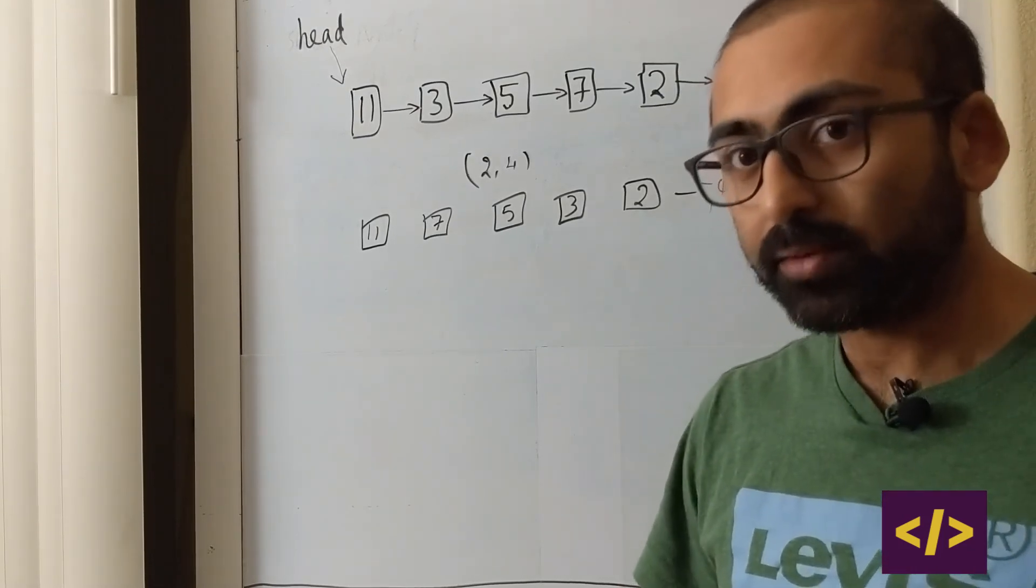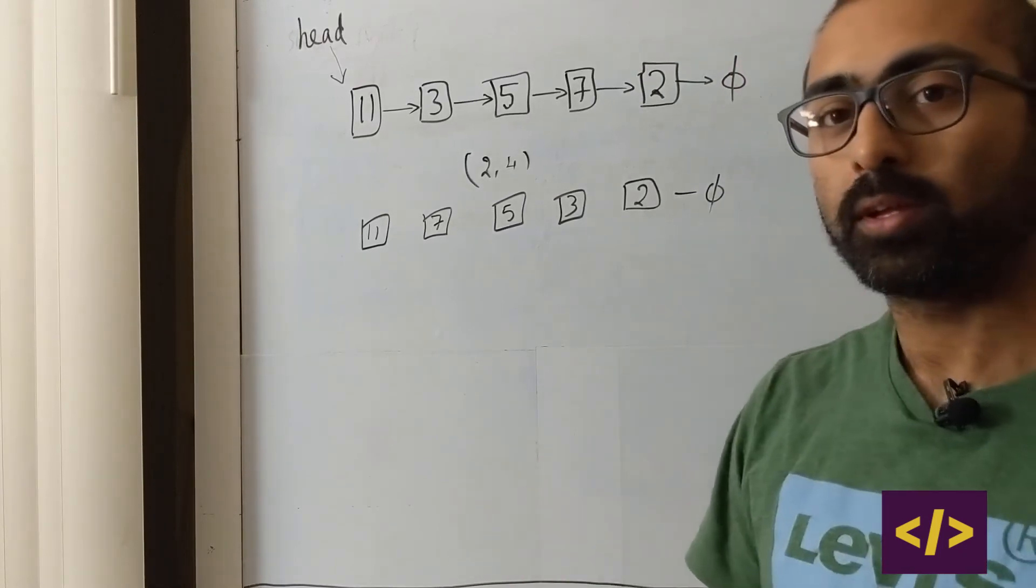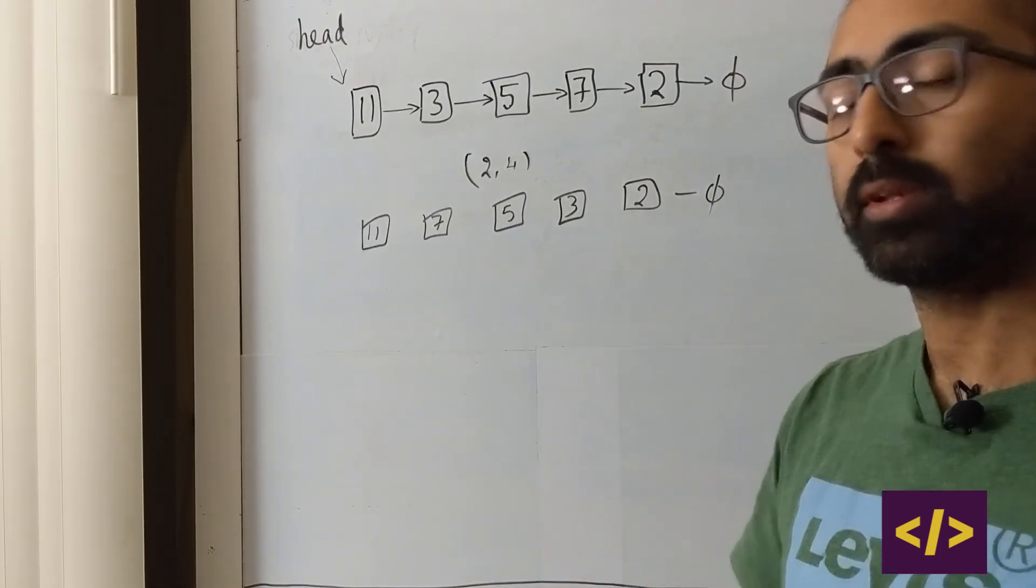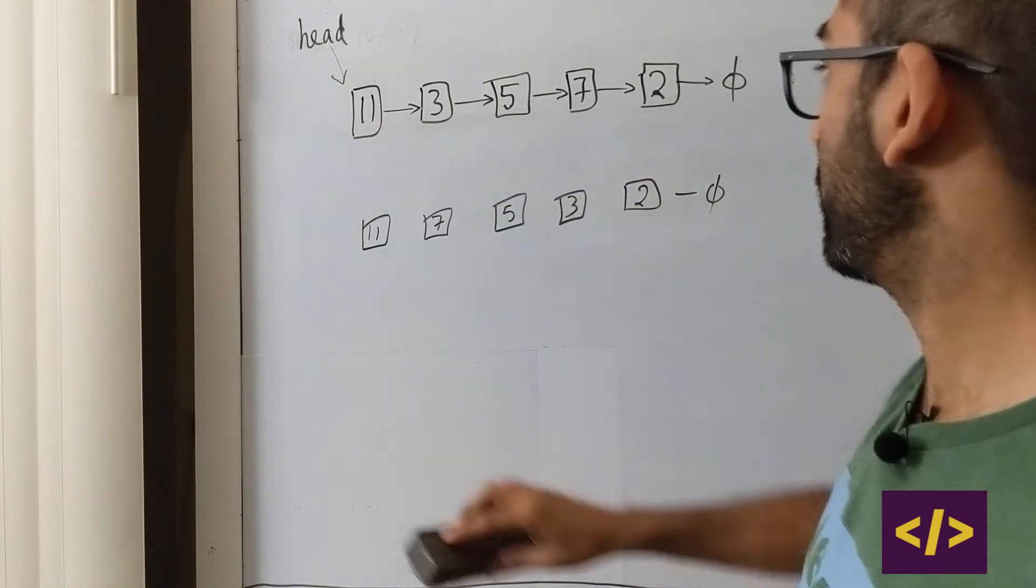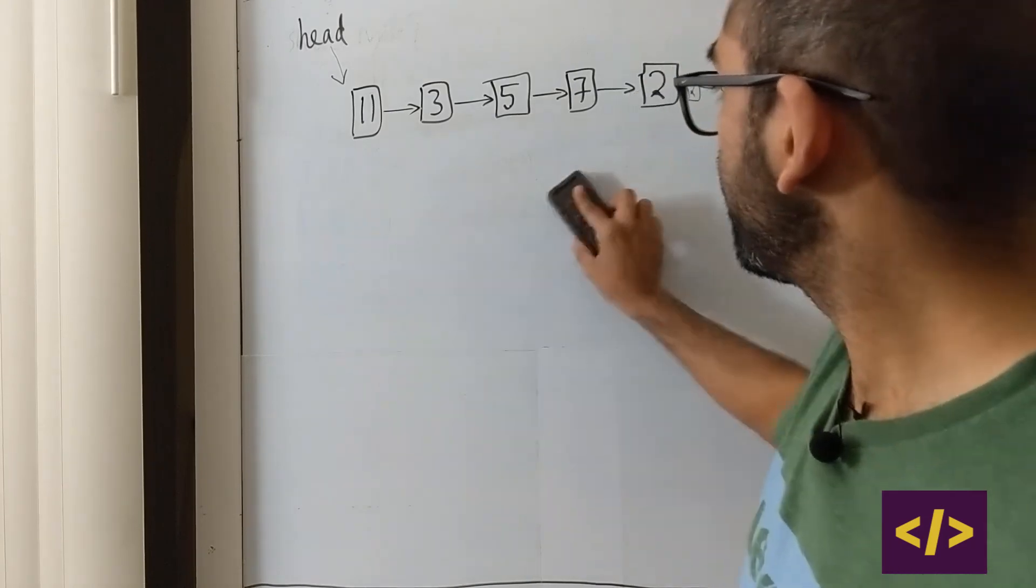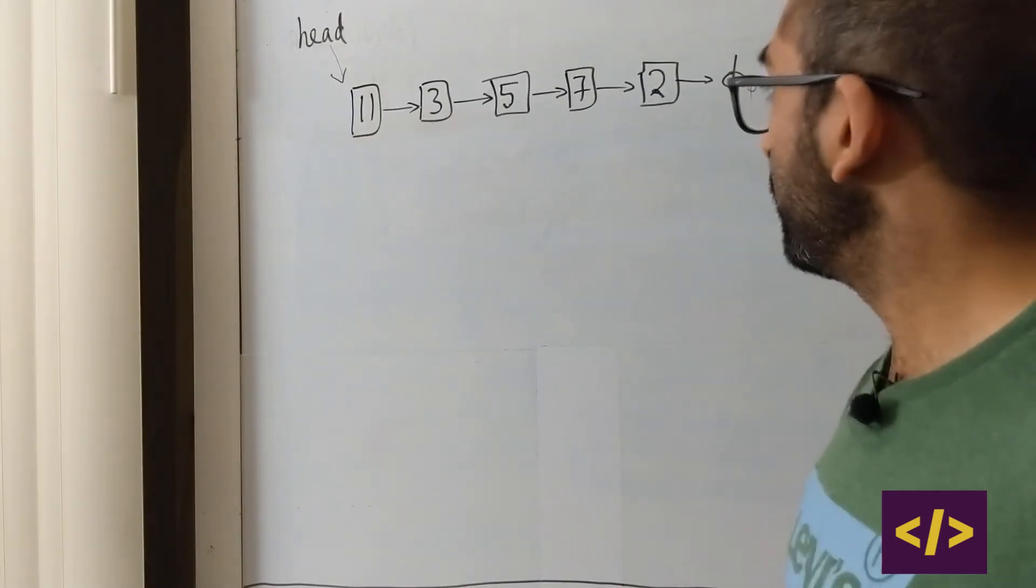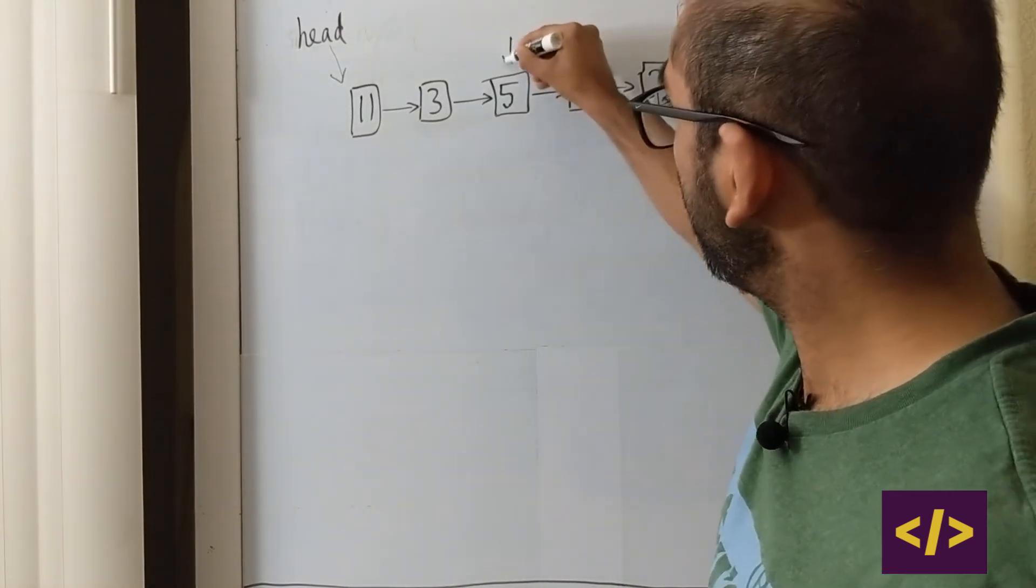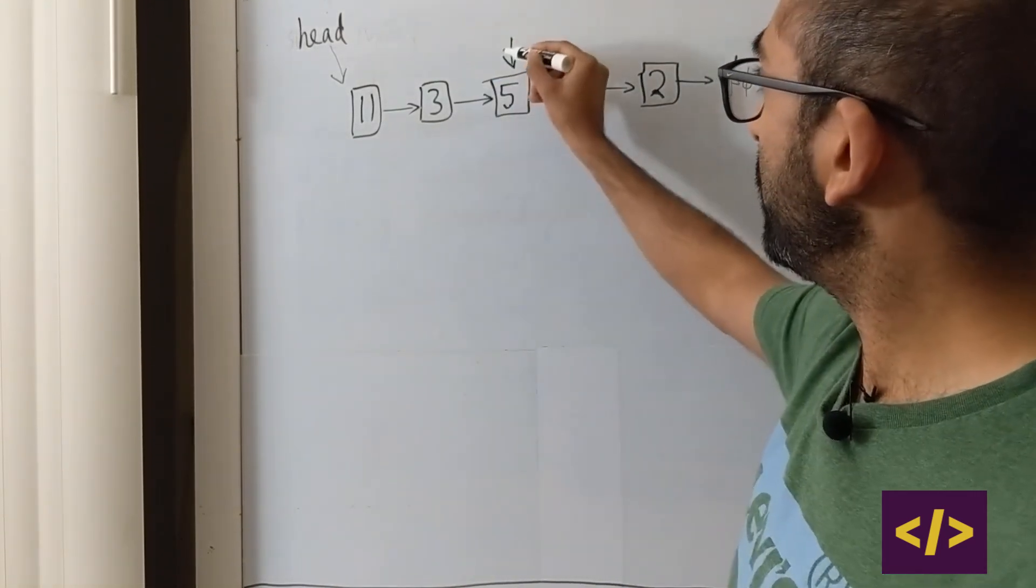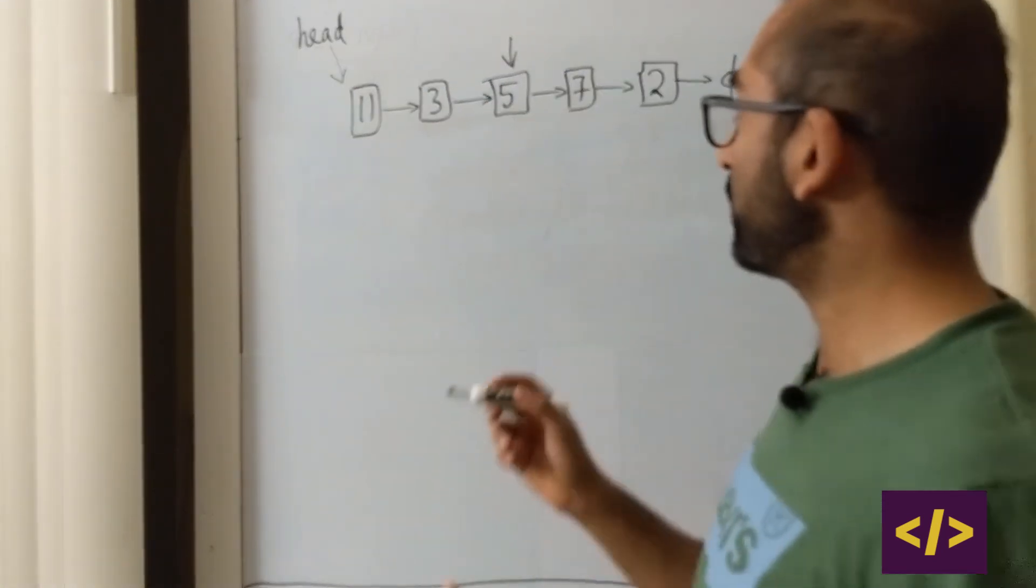1-7-5-3-2. Null character. And now the idea that we are going to use is that, we are going to start unwrapping this little bit. We are going to go step by step. Let's see how we can go step by step on this.